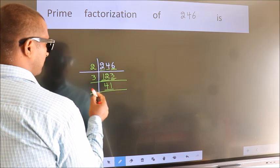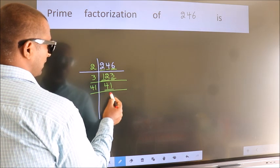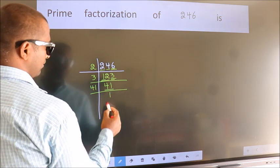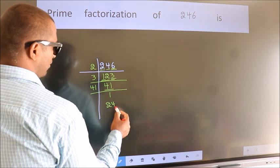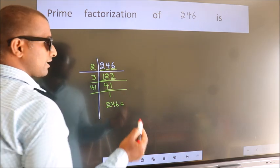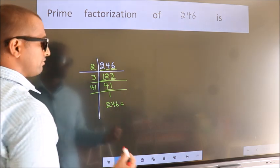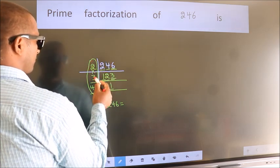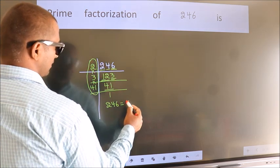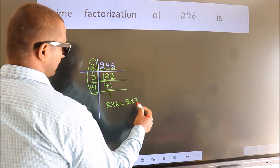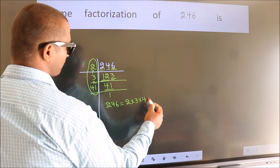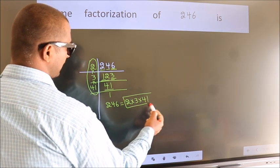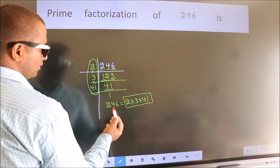Now 41 is a prime number, so 41 times 1 is 41. Therefore, prime factorization of 246 is the product of these numbers: 2 times 3 times 41. This is called prime factorization of 246.